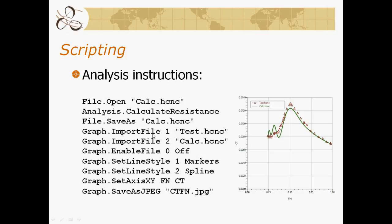We have a graph object that allows us to import files for comparison — comparing our calculated file against our model test file. 'Enable file 0' turns off the active project as a comparison file. We set line 1 (our test) as markers — you can see the triangle markers. Line style 2 for line 2 (calc.hcnc) will be a smooth spline. We set our axes to CT coefficient versus Froude number, then save the graph as a JPEG file named ctfn.jpg.